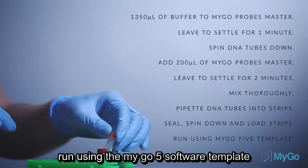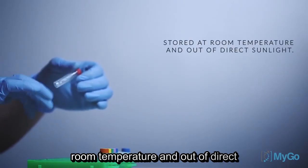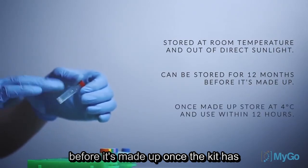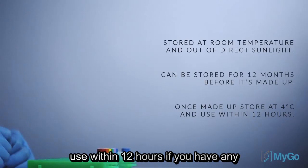Start the run using the MYGO 5 software template. The MYGO 5 demo kit should be stored at room temperature and out of direct sunlight. It can be stored for 12 months before it's made up. Once the kit has been made up, store it at 4 degrees C, and use within 12 hours.